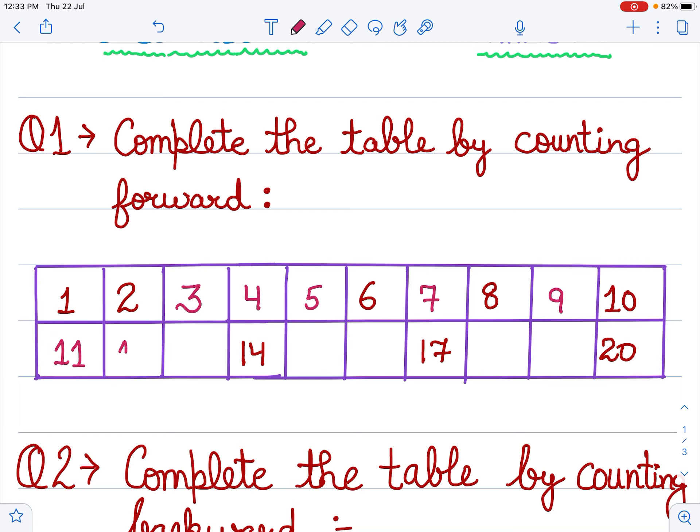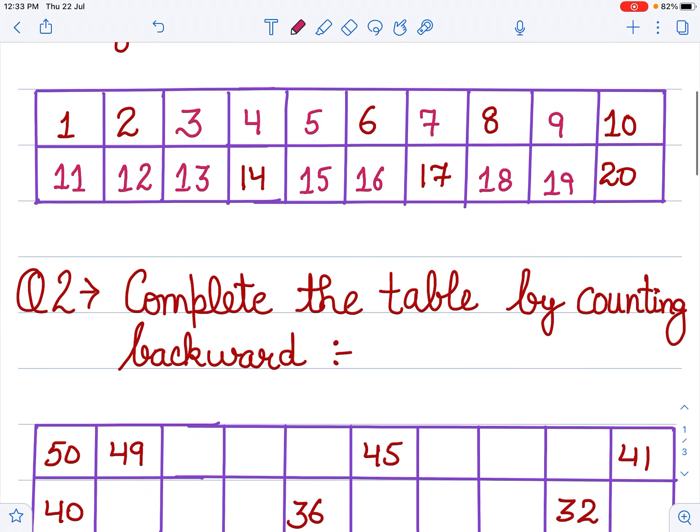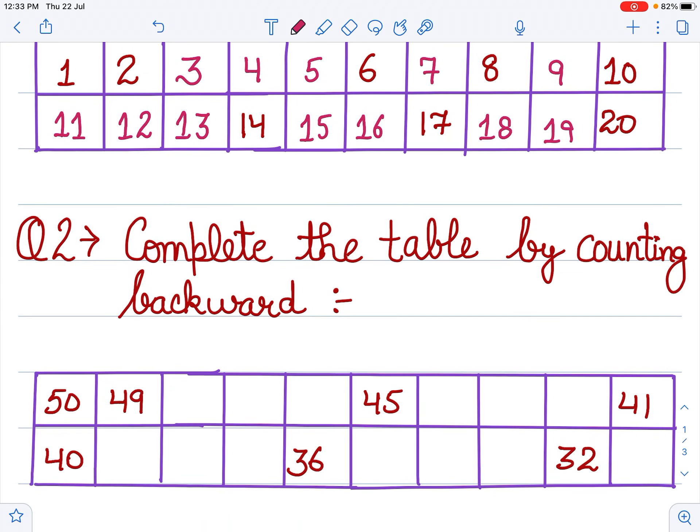10 then 11, 11 then 12, 12 then 13, 14, 14 then 15, 15 then 16, 16 then 17, 17 then 18, 19. Now we have completed forward counting.